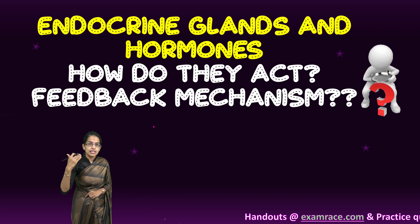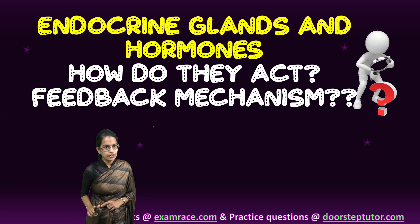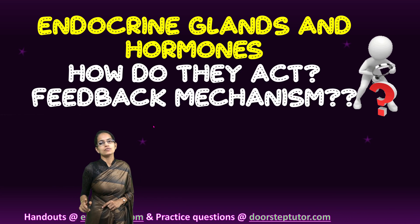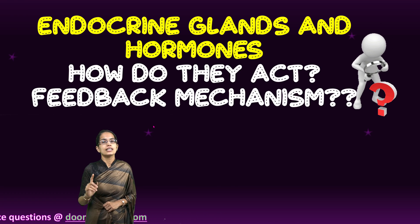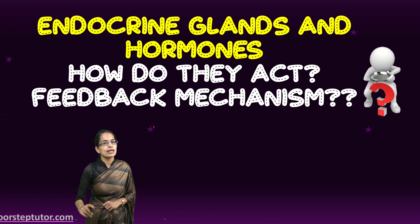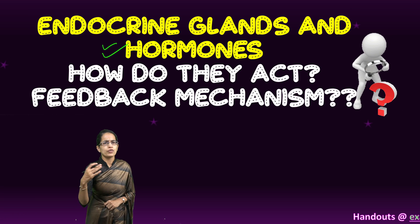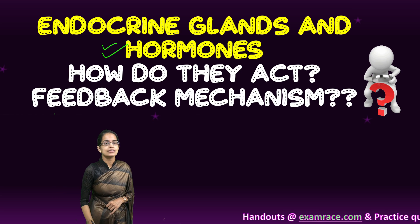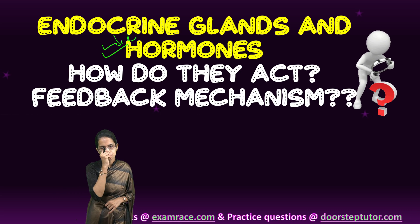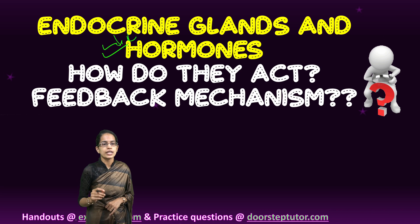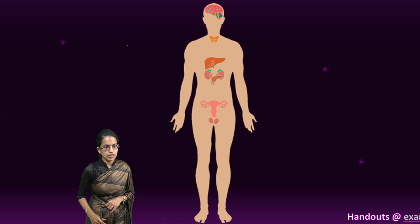Endocrine glands are the various glands across the body which release their secretion directly into the blood. Therefore, they are called ductless glands, and they release chemical messages called hormones. We often hear the term hormonal imbalance, and that is where endocrine glands play an important role. How they act and what the feedback mechanism is, is something that we would discuss.